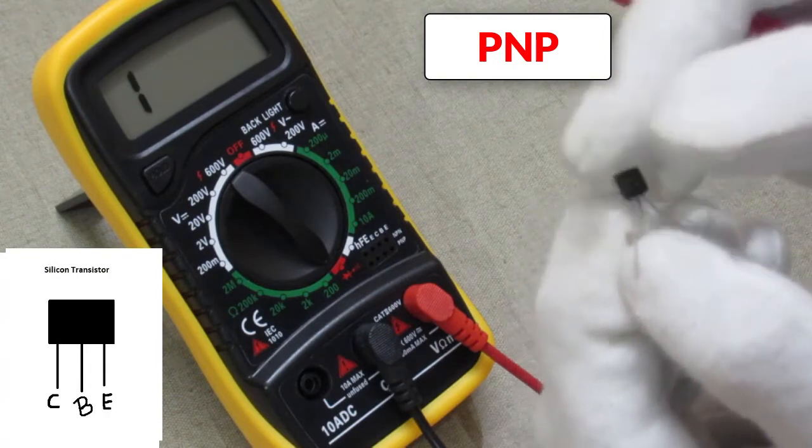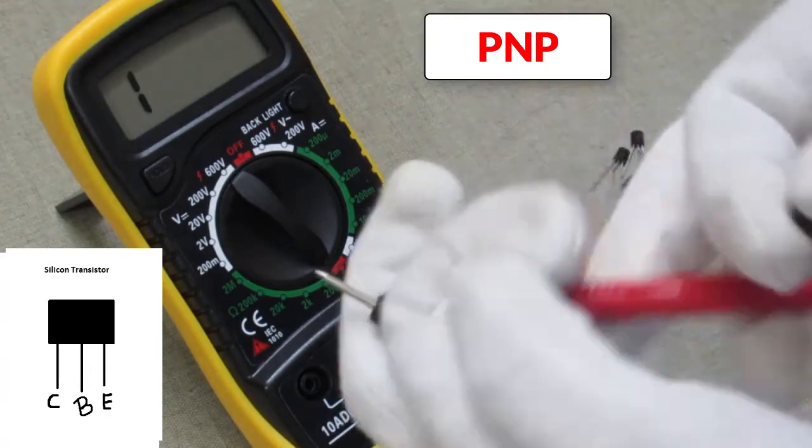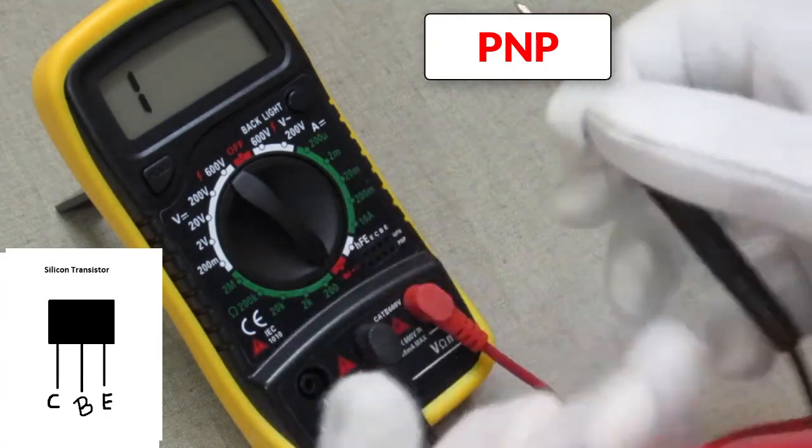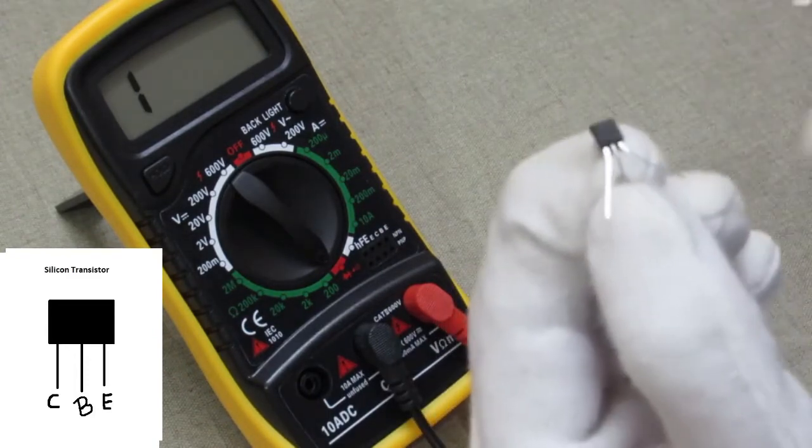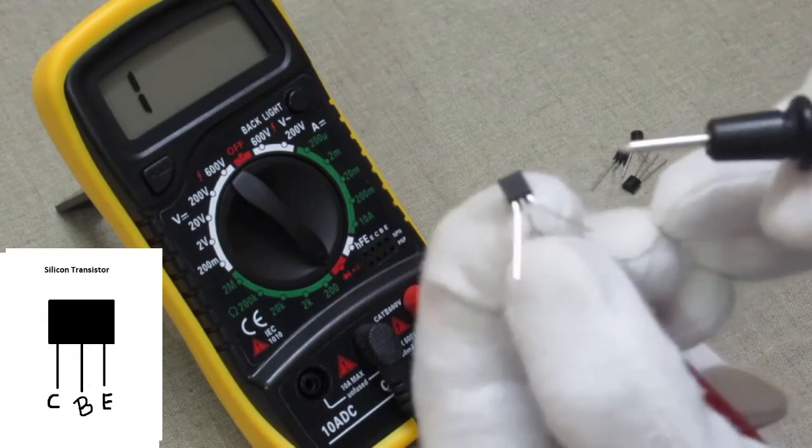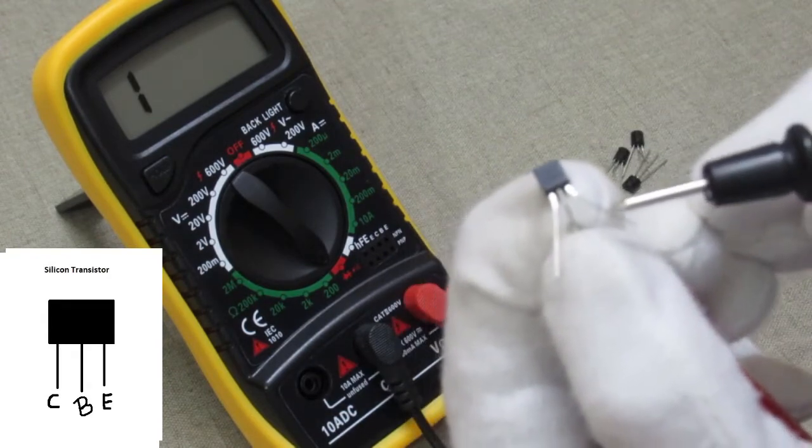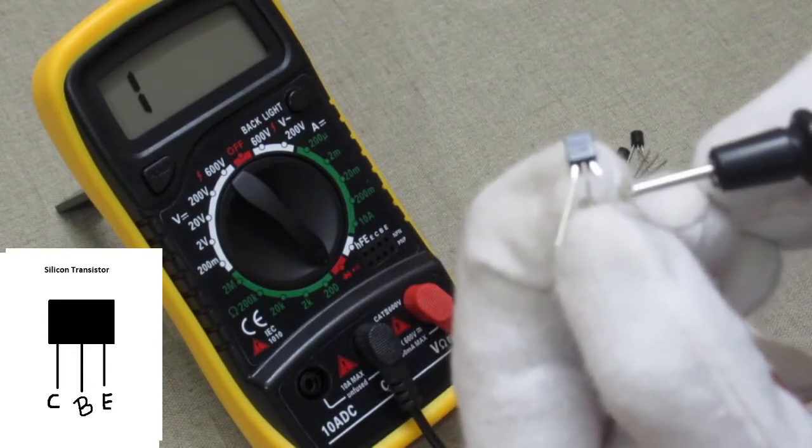That means the transistor is PNP type transistor. Guys, if we change the probe, we touch the red probe to the transistor base and touch the black probe to the emitter.